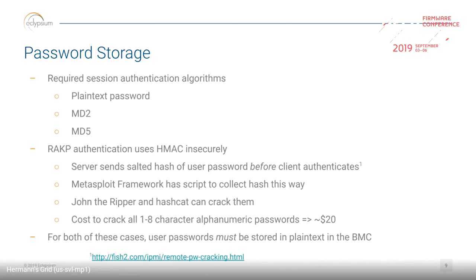If that isn't enough, the RAKP algorithm that runs on top of RMCP+, when actually authenticating to a BMC over the network, has a quirky HMAC implementation: it actually sends you a salted hash of the user password before you authenticate. It essentially sends you the hashed password and asks you to perform a computation validating it's correct. This has been known and reported for many years. In fact, Metasploit has a script you can run over an IP range that will collect all of these password hashes and dump them into formats you can feed into password crackers like John the Ripper and Hashcat.